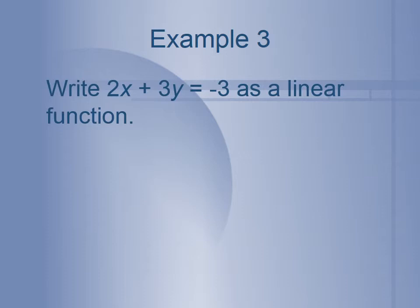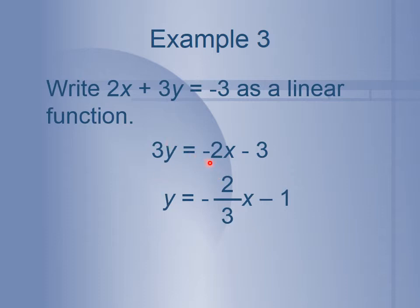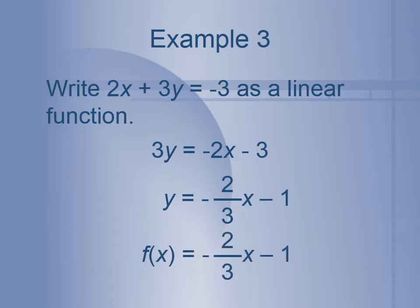Next example: we want to write 2x plus 3y equals negative 3 as a linear function. Step one, solve for y — subtract 2x from both sides and divide everything by 3. Instead of writing negative 2 divided by 3 as a decimal, we leave it as the fraction negative 2 thirds. Then 3 divided by 3 gives us 1 for our b-value. Now we have it in slope-intercept form. To make it a function, we let y stand for f of x to indicate that we plug in an x value to get our y.